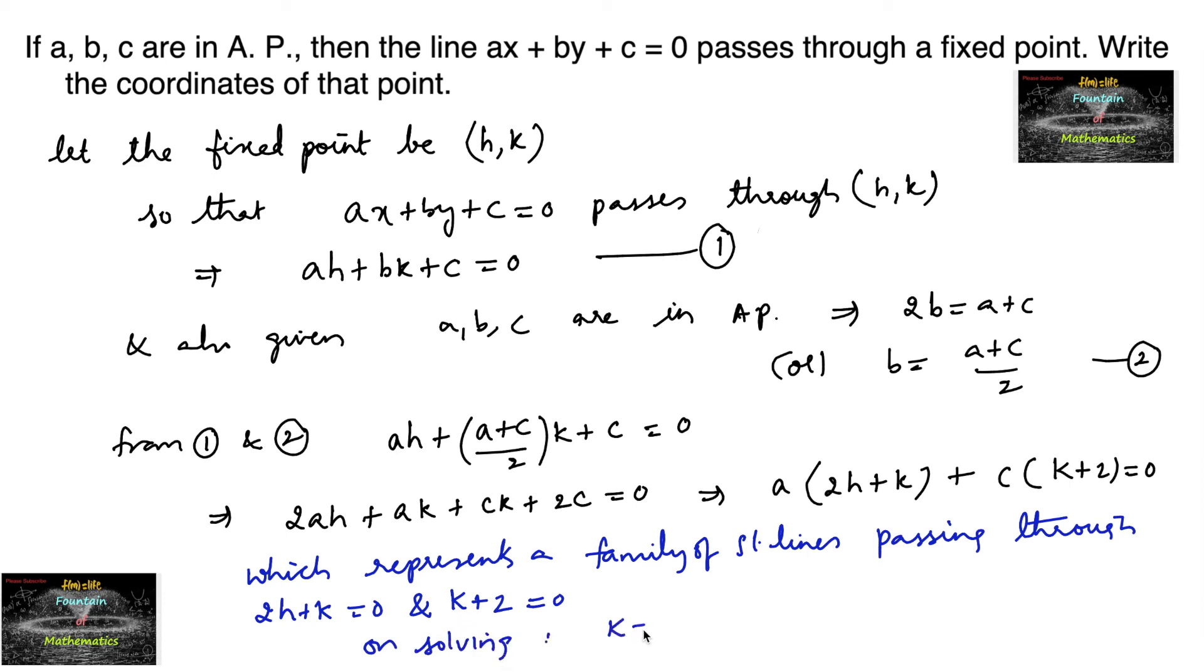On solving, you will get K equals minus 2, and by substituting K equals minus 2 in the first equation 2H plus K equals 0, we'll have 2H equals 2, so H equals 1.